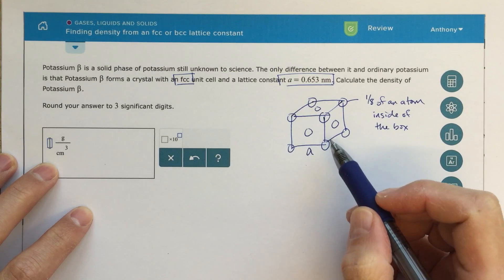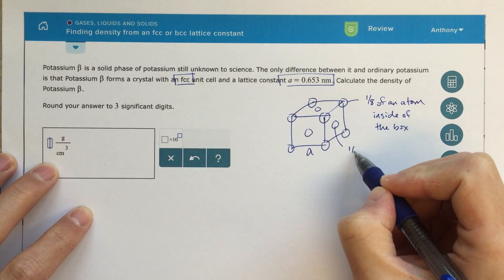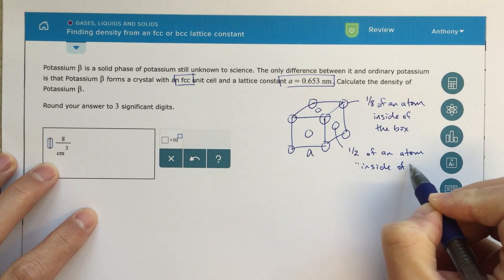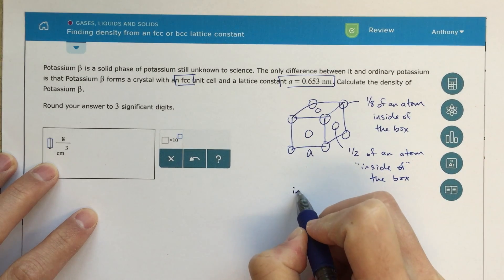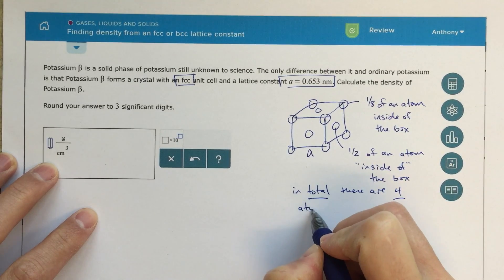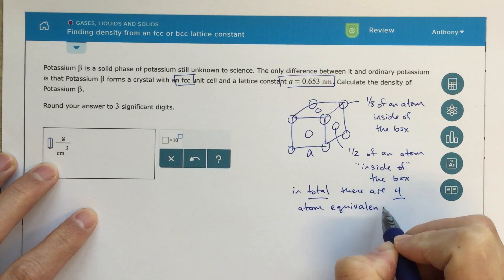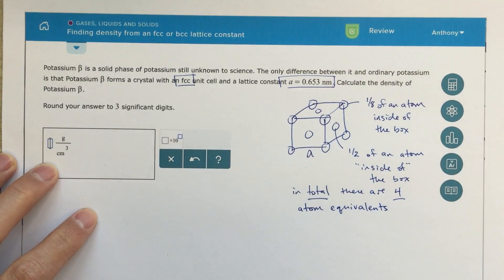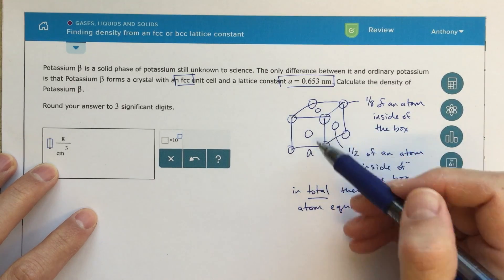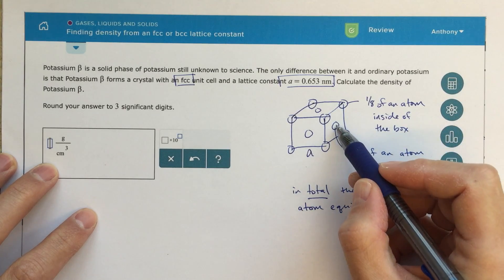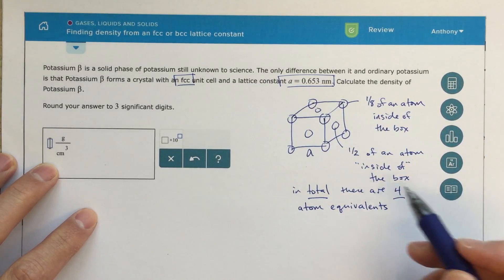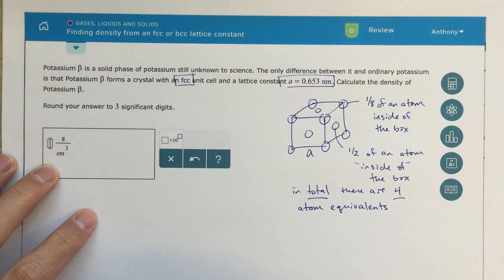Then at each of these face centers, there's going to be one-half of an atom inside of the box. Therefore, in total, there are 4 atom equivalents. It's not 4 individual atoms. In total, if I add up all the different pieces of atoms that I have - one-eighth here, one-eighth here, and then each one of these is a half - so each face, there's 6 faces, I've got a half of an atom. So in total, I've got 3 equivalents from the face atoms, and then 1 equivalent from the corner atoms. In total, there are 4 atom equivalents in this face-centered cubic unit cell, and that will always be the case.